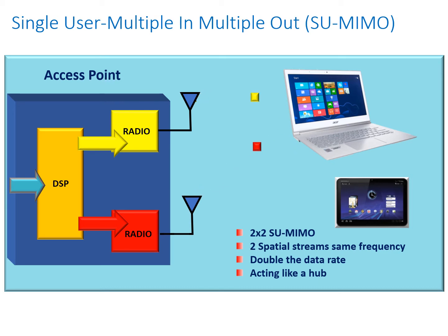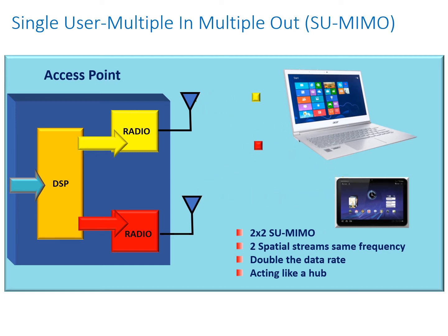Here we're transmitting data to the laptop; now we're transmitting data to the tablet. Each system has to take its turn — we can't transmit in parallel to both the tablet and the laptop. We have greatly enhanced the spectral efficiency by doubling the data rate, but larger numbers of users will all have to take their turn. So we could have three, four, five, six, many users, but you're going to have to do a round robin — just like a hub, each system takes its turn.